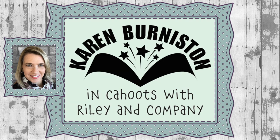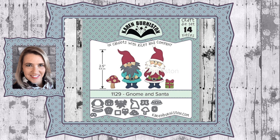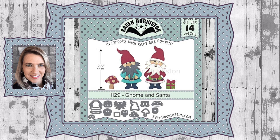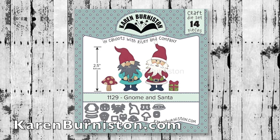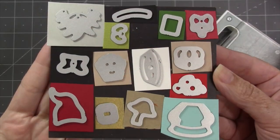Hello, it's Karen Burniston here with an assembly video for one of our die sets. This is die number 1129, the Gnome and Santa, and you can check out all of our die designs at KarenBurniston.com. There are 14 dies in the set.